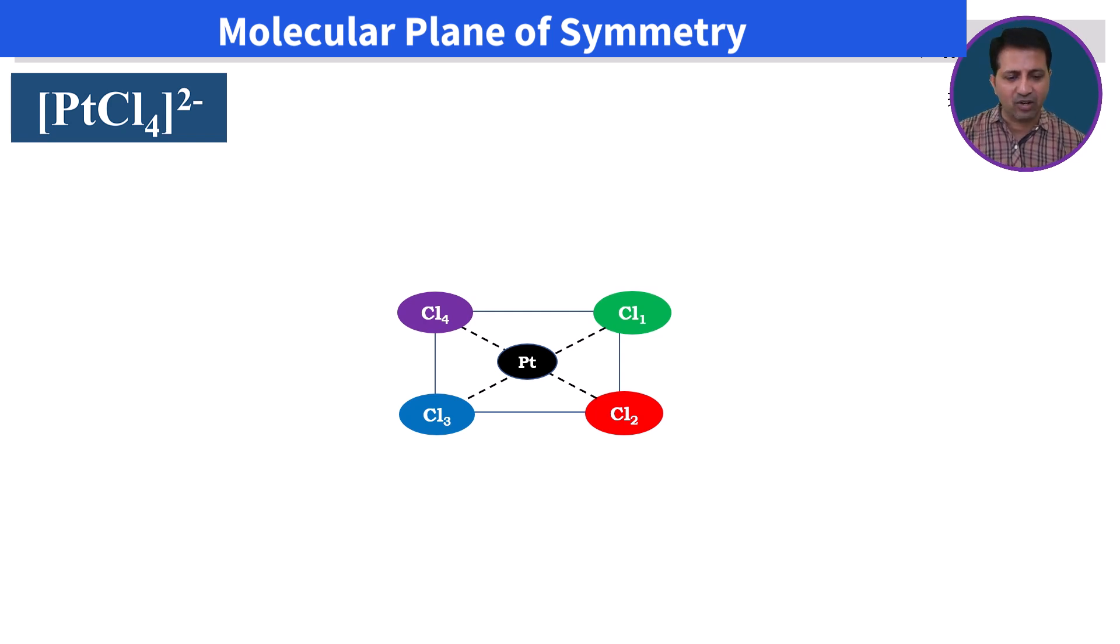As you see on screen, platinum is located at the center from which the principal axis passes, and remaining chlorine atoms are outside this platinum atom. This principal axis is called the C4 axis because we can rotate this molecule through 90 degrees.